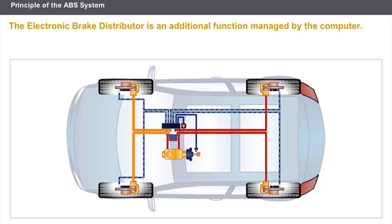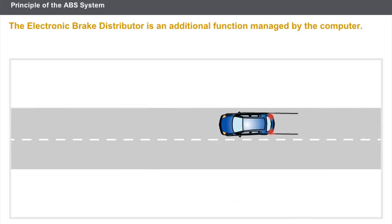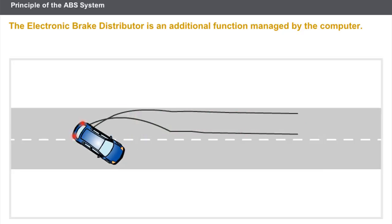If the ABS system is no longer electrically supplied, the electronic brake distributor becomes inoperative. There is then a major risk of the rear wheels sideslipping when braking.